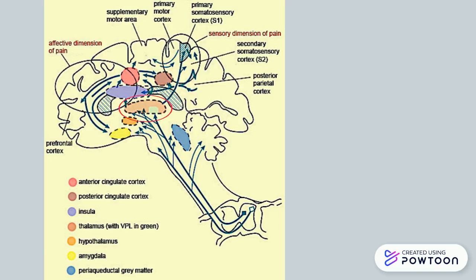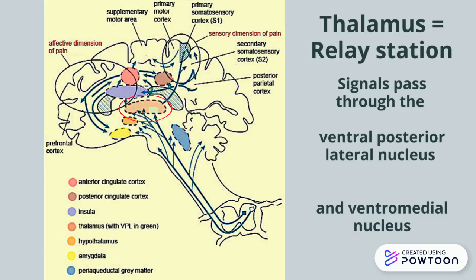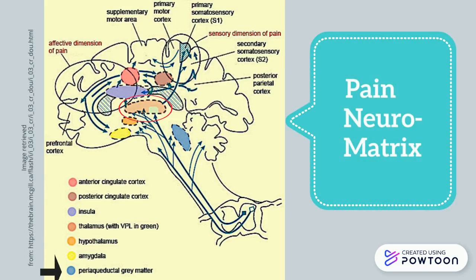The thalamus serves as the major relay station for sensory information to the cerebral cortex. The thalamic nuclei relay signals to the somatosensory cortex and then to various integrated cortical and subcortical regions, collectively known as the pain neuromatrix. This includes the amygdala, hypothalamus, periaqueductal gray, basal ganglia, and insula.